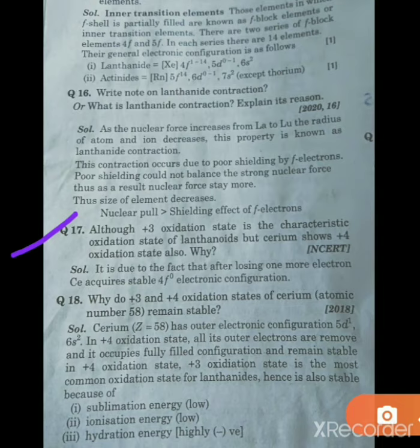Here we basically have to consider the electronic configuration of cerium. Generally, our lanthanoids show +3 oxidation state and are stable in that. But when the +4 case comes, students, in the +4 case, cerium has 4f^0. So here we get stable configuration, an inner core configuration is obtained.